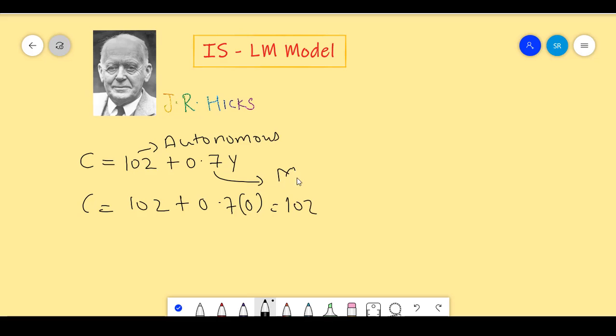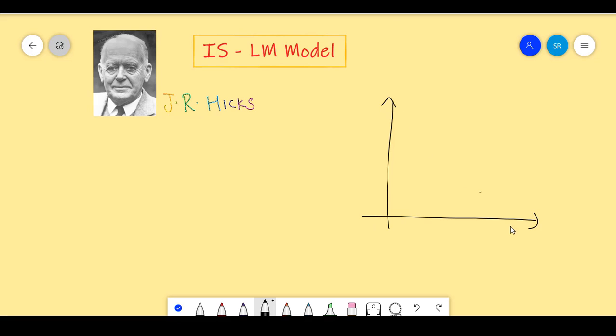The 0.7 over here is what we call the marginal propensity to consume. This showcases that as our income increases by 1 rupee, our consumption increases by 0.7 units. We can always plot this and see how the curve looks like. However, I am not going to go into the details of plotting in this lecture. We have already done this in the previous lectures and I expect you now to do it on your own.